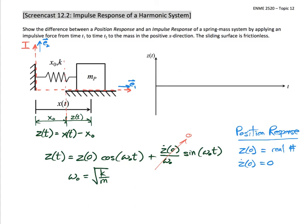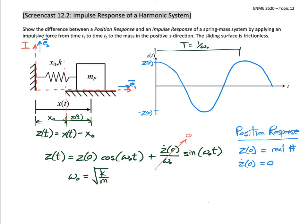Let's plot this on our figure with z-naught as a starting position — this is the position response. Because it's a cosine function, we're going to oscillate between z-naught and negative z-naught in a cosine wave. This cosine has a period equal to one over the natural frequency. The oscillation is governed by the initial amplitude the mass is pulled from equilibrium, and because we don't have any damping in this system, that oscillation is going to occur indefinitely.